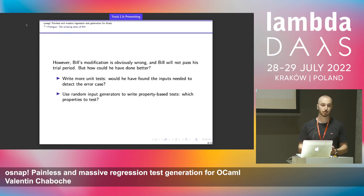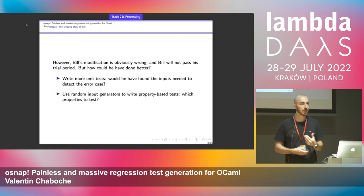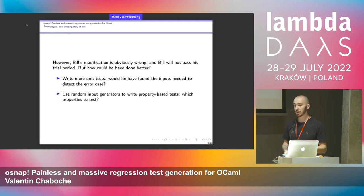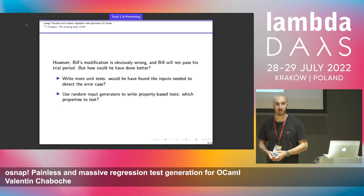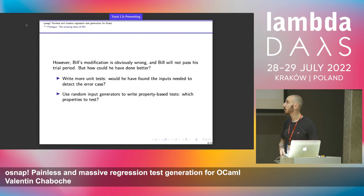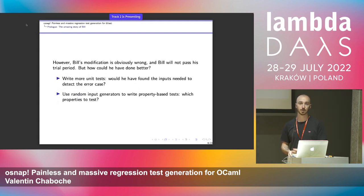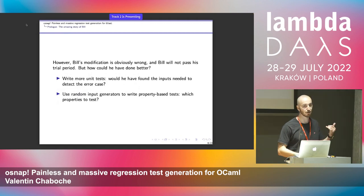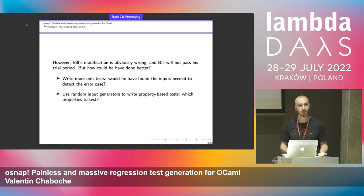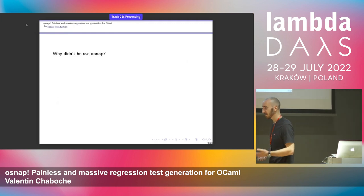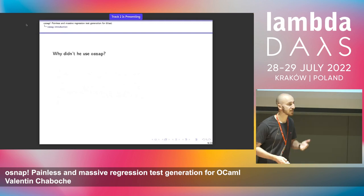The first easy solution is to write more unit tests. But the issue with unit tests is that if you write the inputs you like, you may not find the corner cases that would detect the error. Otherwise, you could use property-based testing, which can create random inputs — but to do so, you need to know properties on your code, and it can be really difficult to find good properties. So he wasn't able to do that because Bill just discovered the software. But the question is: why didn't he use OSNAP?